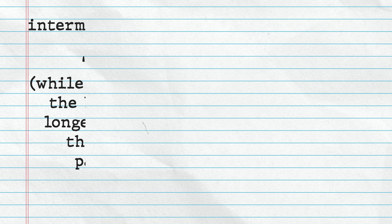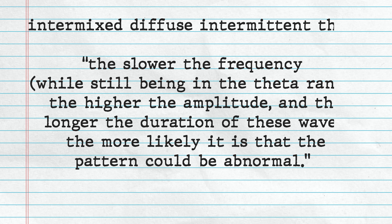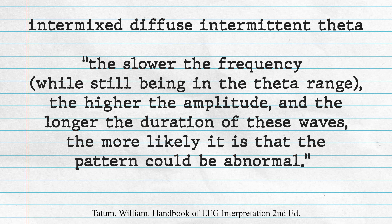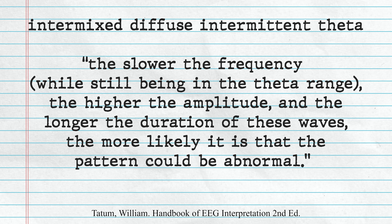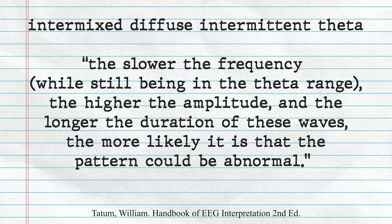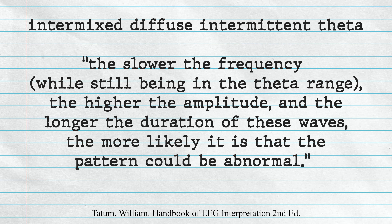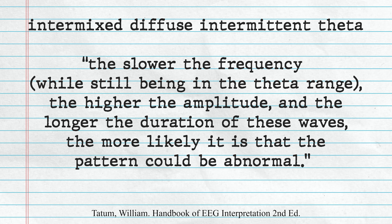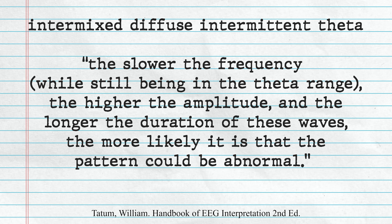The rule of thumb in regards to intermixed diffuse intermittent theta is that the slower the frequency — while still being in the theta range — the higher the amplitude and the longer the duration of these waves, the more likely it is that the pattern could be abnormal.